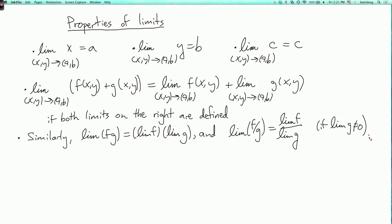A more general property, which is useful, is that if h from R to R is continuous, and the limit as (x,y) goes to (a,b) of f(x,y) equals L, then the limit as (x,y) goes to (a,b) of h(f(x,y)) equals h(L).